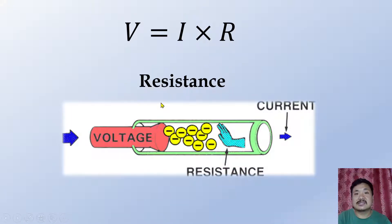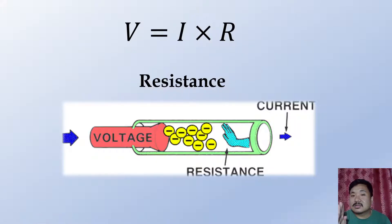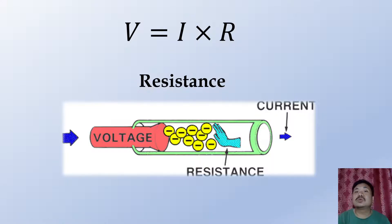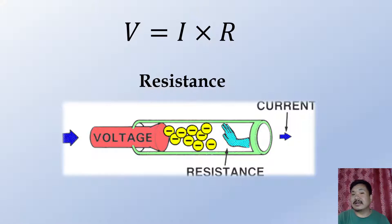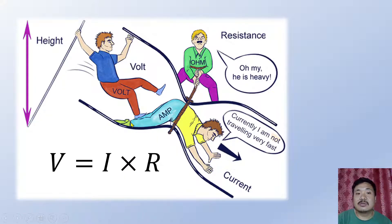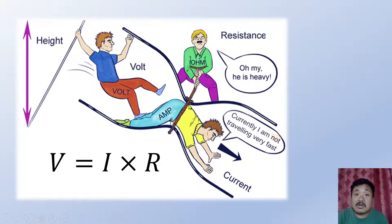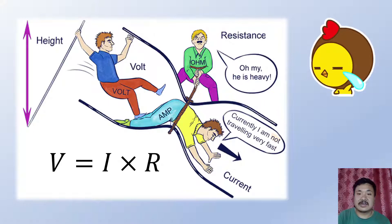As you can see, more voltage means more current. Now, in this conductor, electrons are flowing. The resistance is the property that is trying to block the flow of electrons, the flow of current. So resistance is the property of a material that tries to block or stop the flow of current in a conductor.